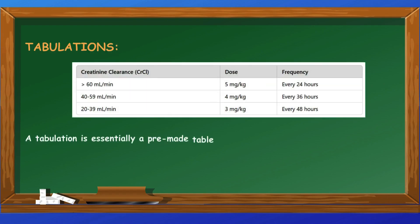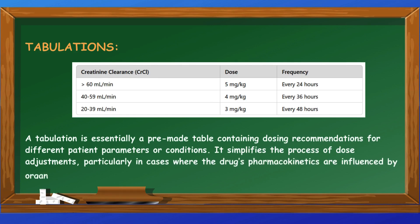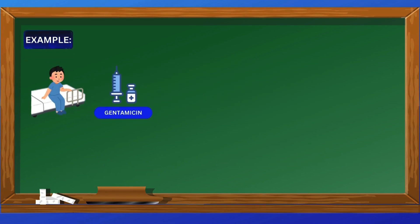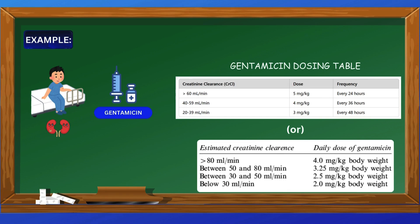Let's move on to tabulations. A tabulation is a pre-made table containing dosing recommendations for different patient parameters or conditions, simplifying dose adjustments particularly where pharmacokinetics are influenced by organ function or disease states. For example, consider a patient who needs gentamicin but has kidney impairment. Since gentamicin is excreted primarily through the kidneys, we must be cautious to avoid toxicity. Instead of performing complex pharmacokinetic calculations, we refer to a gentamicin dosing table, which provides dosing adjustments based on the patient's renal function — typically measured by creatinine clearance — ensuring both safety and efficacy.